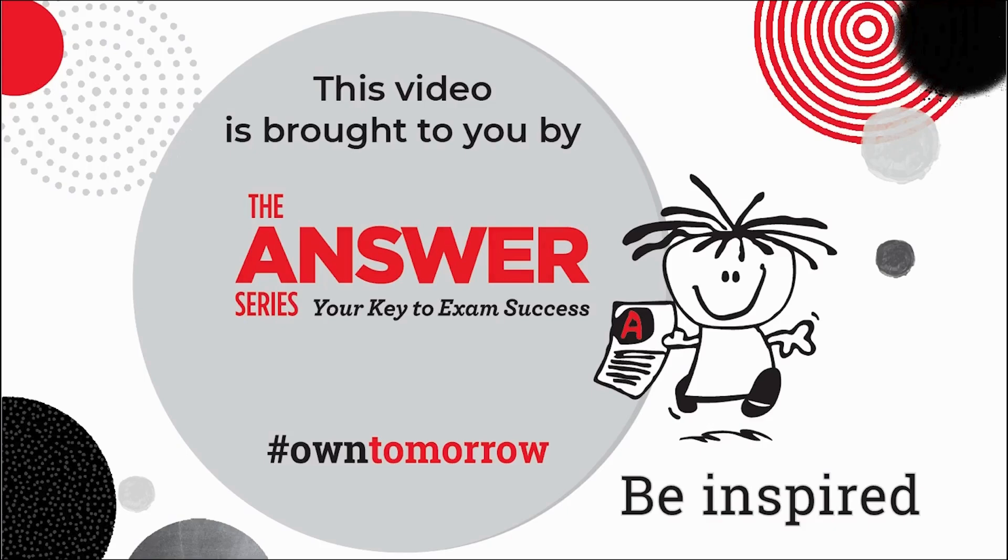In this video we looked at proving identity questions excluding compound and double angles. Once you are comfortable with this, continue on to watch part 2. Here you will see that the thinking process is the same, just with compound and double angles included as an extra of what to be on the lookout for.